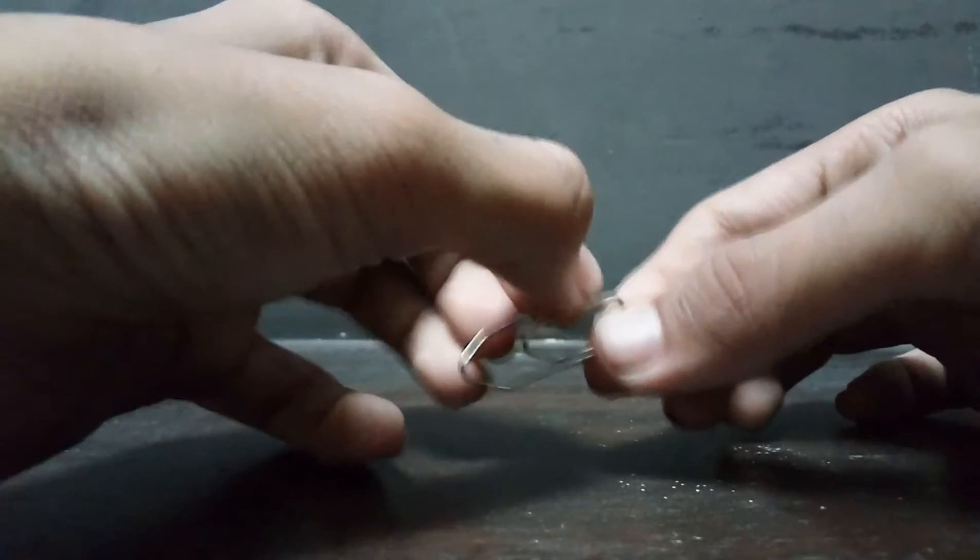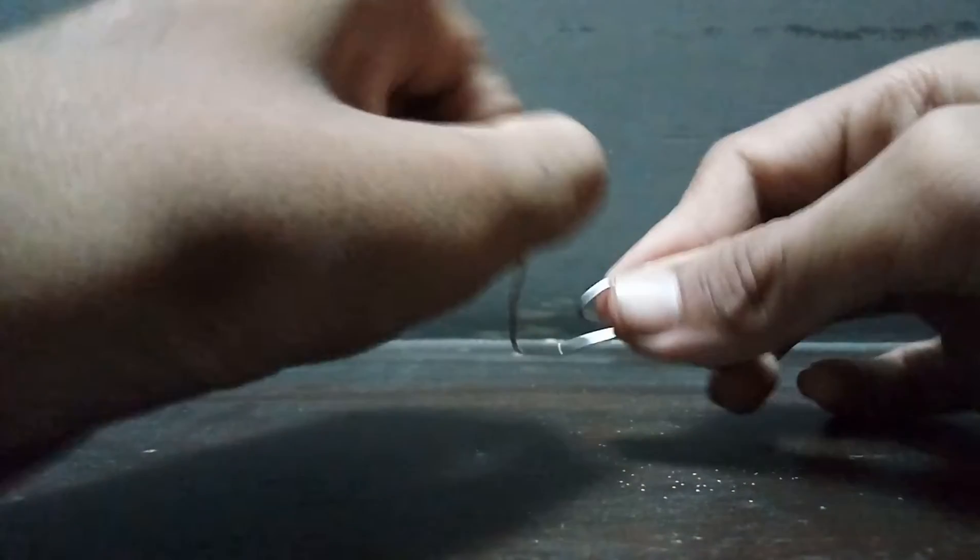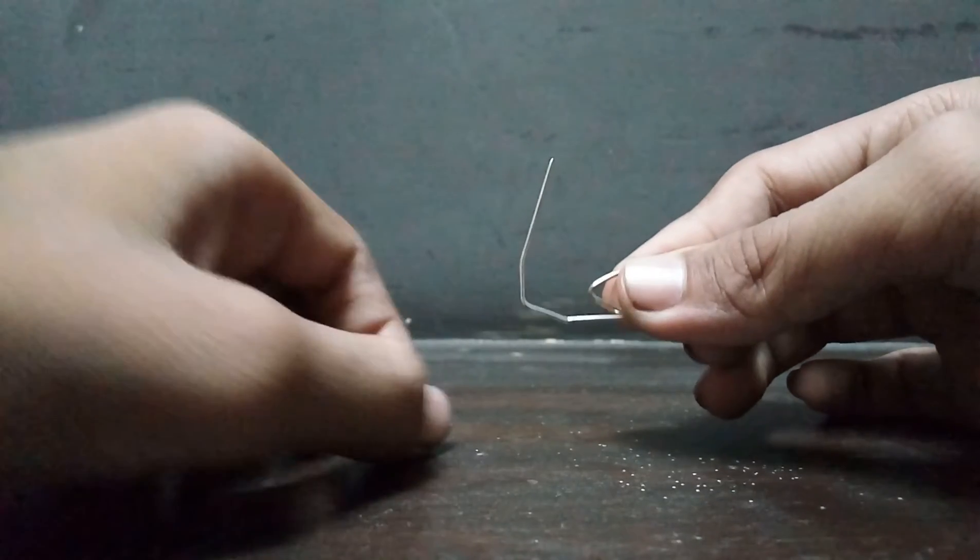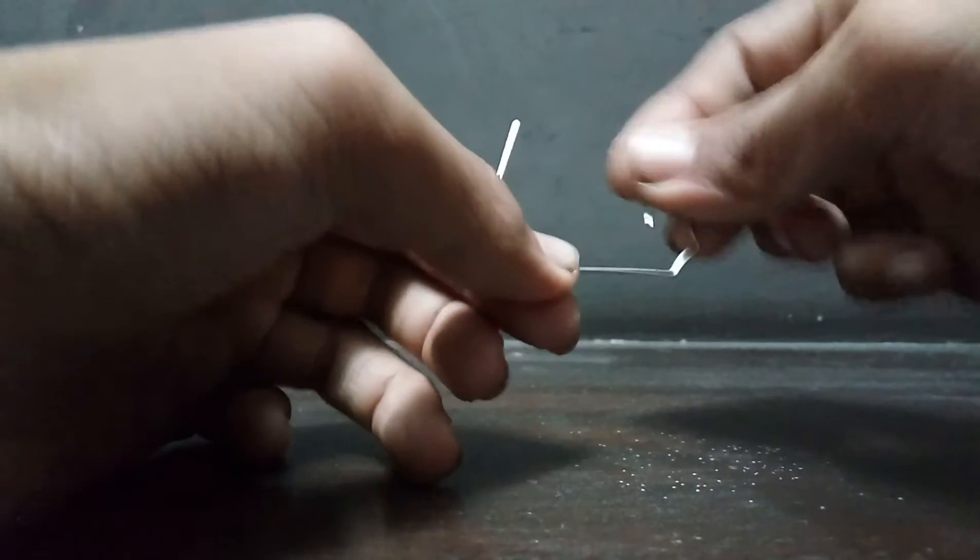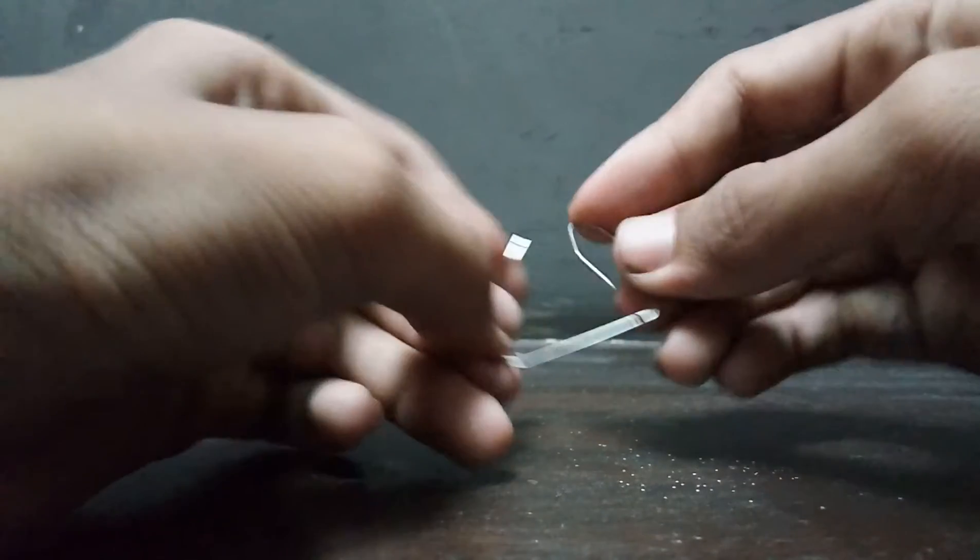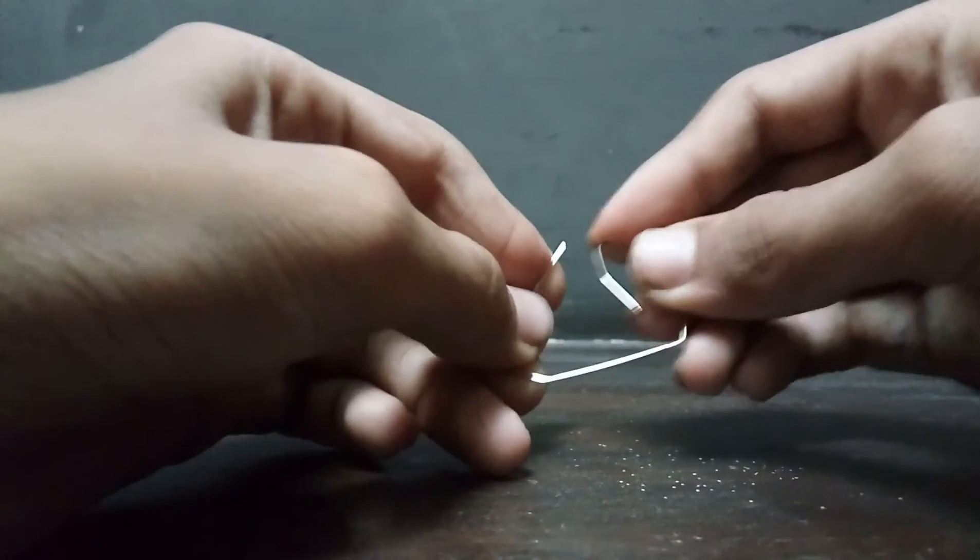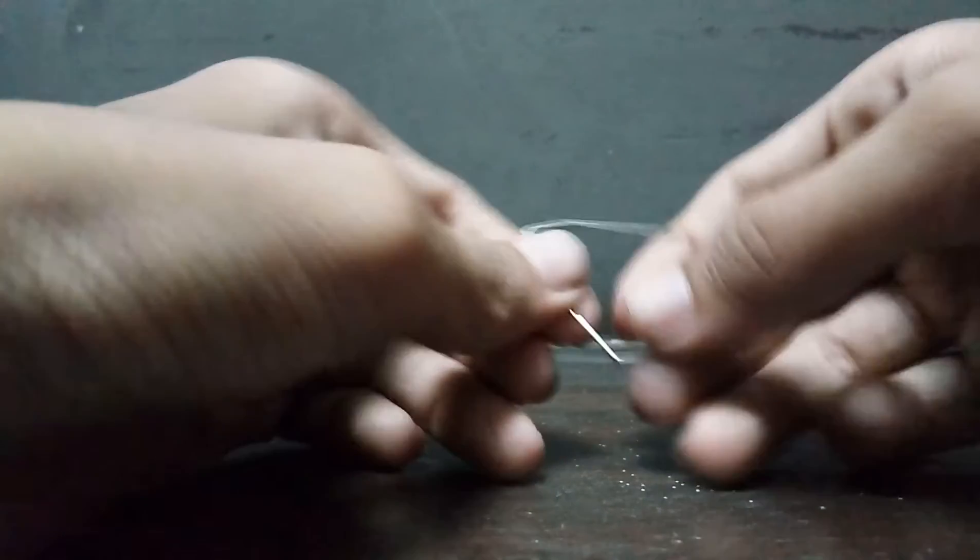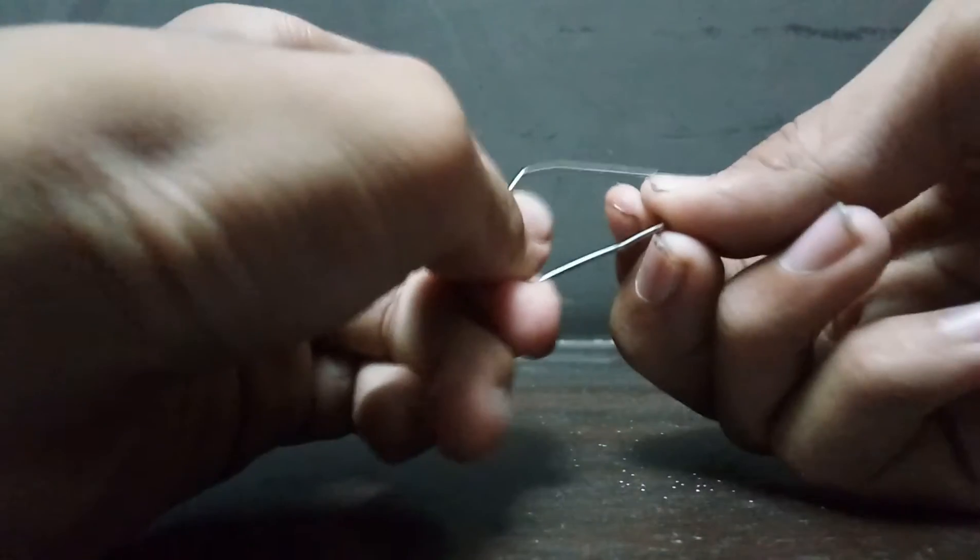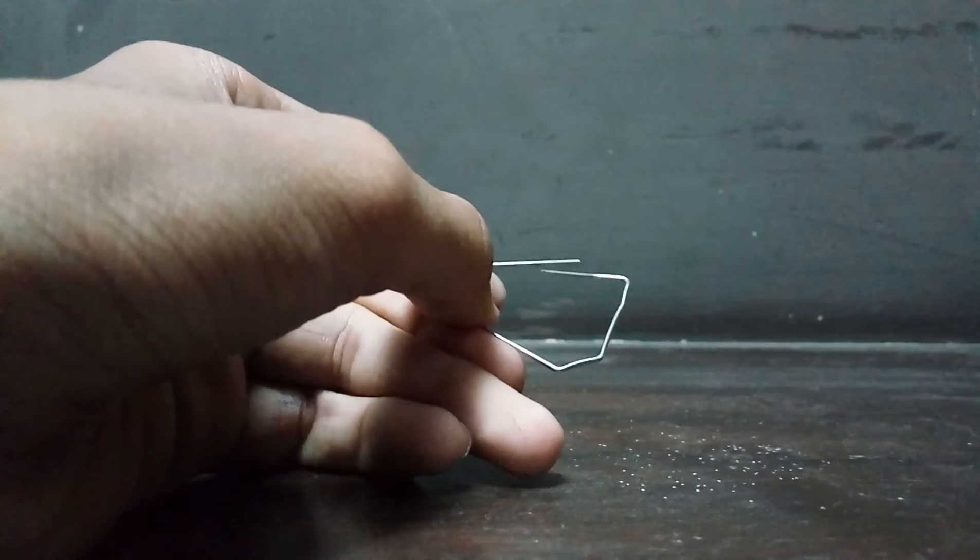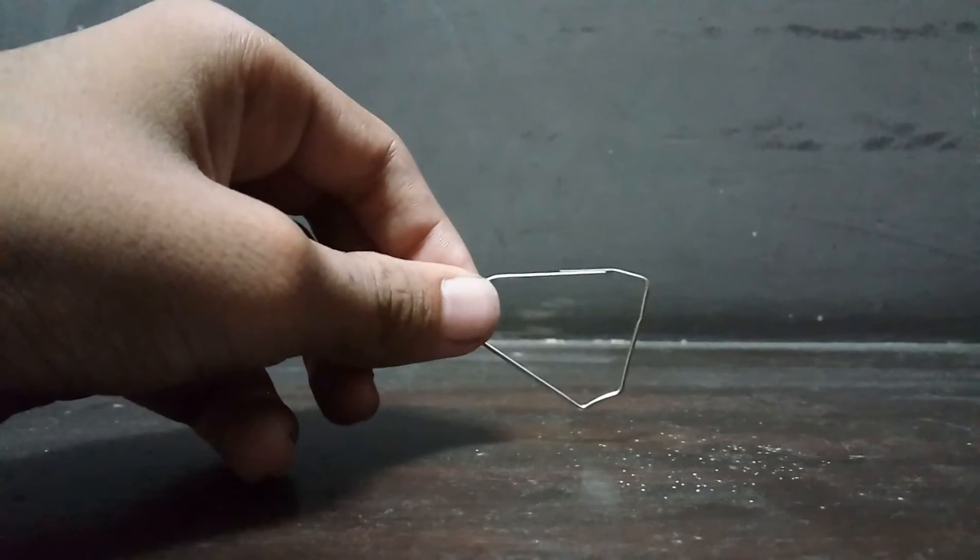First, you have to take out this part, then take out this part. Just keep a little triangular shape between these two parts. Then take out this part gently and level them up.